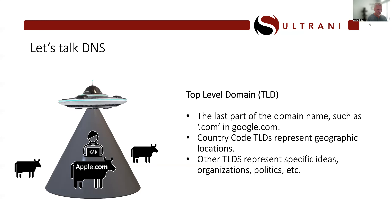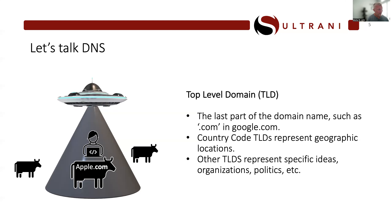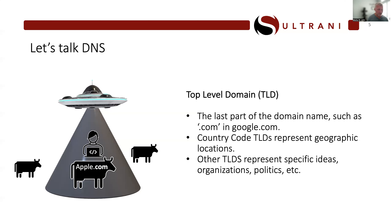ICANN allows registration of these TLDs and distributes or leases this out to other entities. Depending on the contract, only some organizations can create certain TLDs — the .gov TLD is very restricted to only a few organizations, while .laboratory can be created by just about anybody. Some country code TLDs are represented only by entities that exist in those countries.